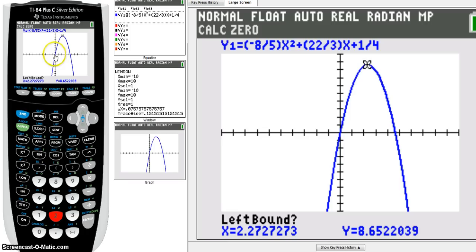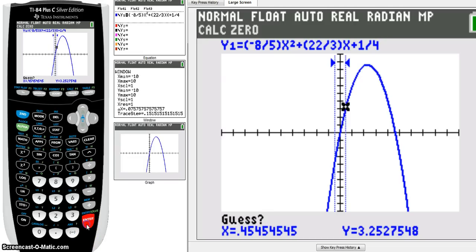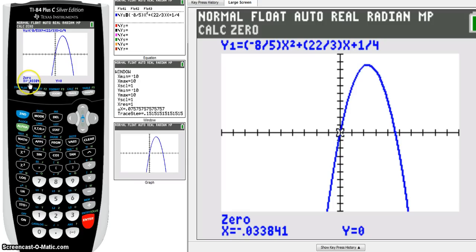So let's start off by finding this one. So first, we have to go to the left of it. So I'm going to arrow left so that I'm on the left-hand side. So here, this is to the left of it. And I'm going to press enter. And then it says right bound. So arrow right so that you're on the right-hand side. So I'm on the right-hand side of it. And press enter. Guess. Yes, calculator. Please guess and tell me what it is. And the 0 is -0.033. So that would be one x-intercept.